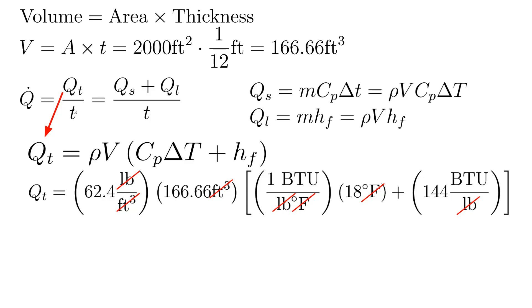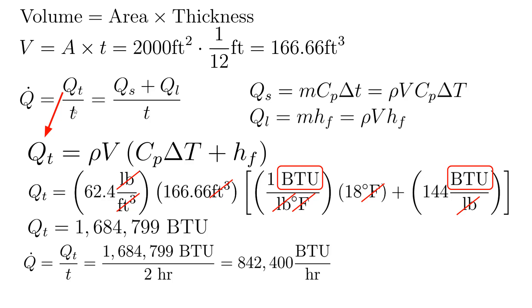As you can see, all the units cancel out, the cubic feet go away, the pounds go away, the degrees go away, and all we are left with is BTUs, which makes sense because this is the total energy. It's not yet the energy per unit time. In order to do that, we need to divide it by the time. So right now, it's 1.6 million BTUs. Now we go ahead and divide it by the two hours in which we want the freezing to happen. And we get 840,000 BTUs per hour.